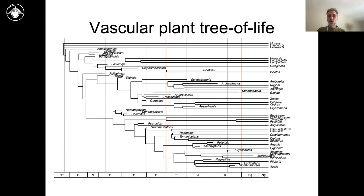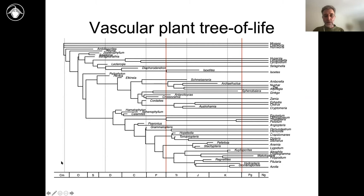Here's a phylogeny diagram of the vascular plant tree of life. Each of these lines is a lineage evolving through time from a common ancestor up to the present day. All the words on the end are present-day organisms, and all the ones that end somewhere before now are fossils. The timescale is pretty intense — each of these gray lines is a hundred million years. So here we are back at 500 million years ago, a huge timescale.